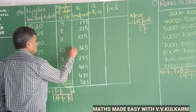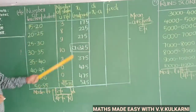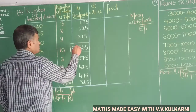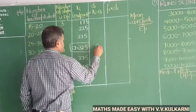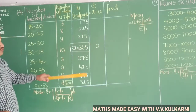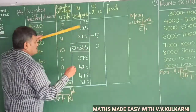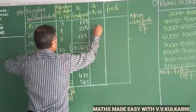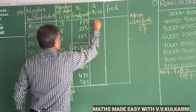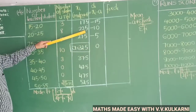I will assume 32.5 as the assumed mean. The deviation di is calculated as xi minus 32.5. So for 32.5 itself, di is 0. For 27.5, di is minus 5. For 22.5, di is minus 10. For 17.5, di is minus 15.